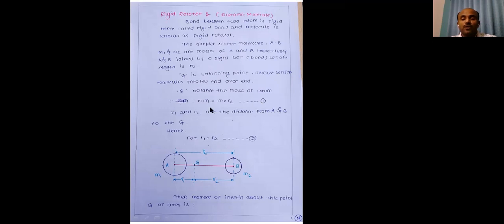We now have two equations: M1R1 = M2R2 (equation 1) and R0 = R1 + R2 (equation 2). From equation 2, R2 = R0 − R1. Substituting into equation 1: M1R1 = M2(R0 − R1). After solving, we get R1 = M2R0 / (M1 + M2).